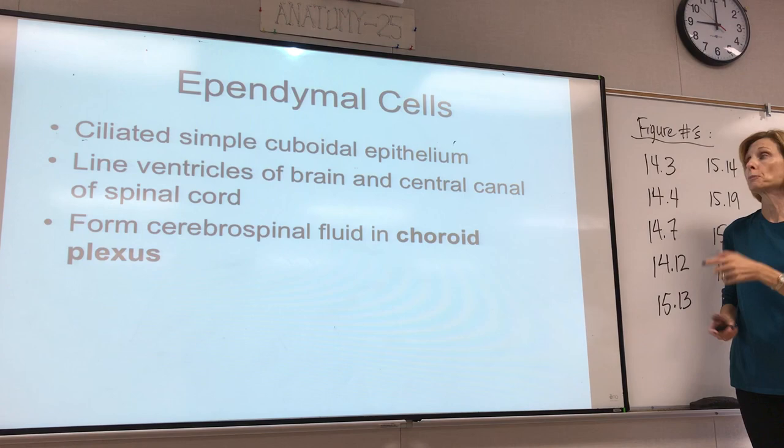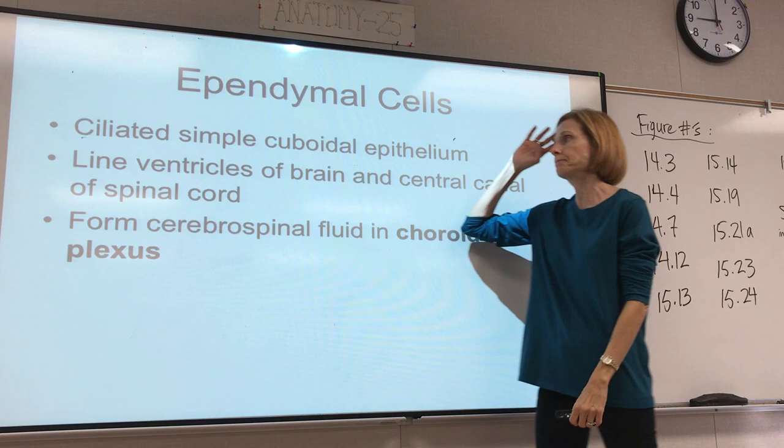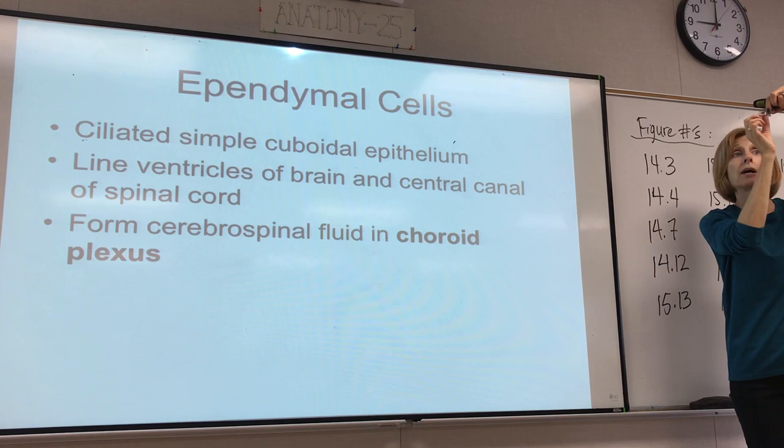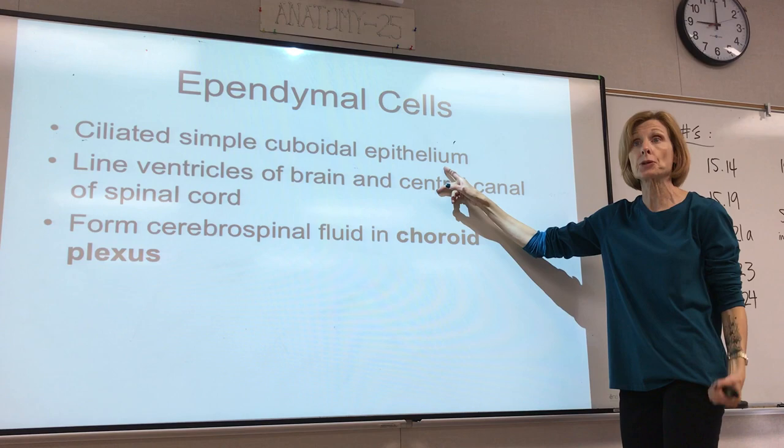Another type of neuroglial cell in the CNS is called an ependymal cell. This is actually a type of epithelium — it is simple cuboidal with cilia. Epithelial tissues line cavities, and we actually do have cavities in the brain called ventricles, and a canal that runs down the spinal cord called the central canal. This is the type of tissue that lines those areas.